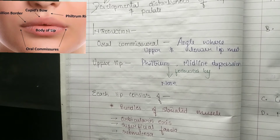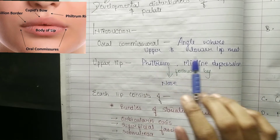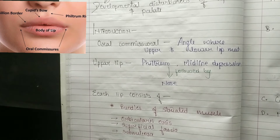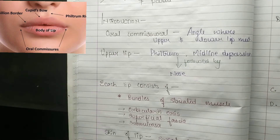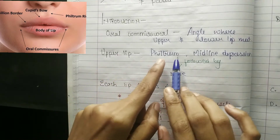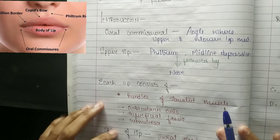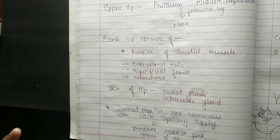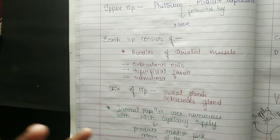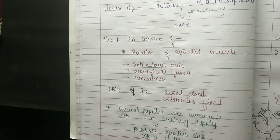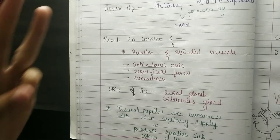What is oral commissure? It is the angle between the upper lip and lower lip — we call it oral commissure. I will show you a picture of it, it will be very easy. What is involved in the upper lip? The upper lip involves the philtrum, a midline depression which is followed by the nose. Each lip consists of a bundle of striated muscle — orbicularis oris — superficial fascia, and submucosa.